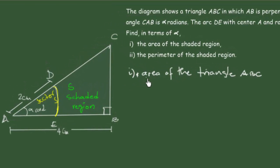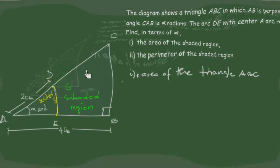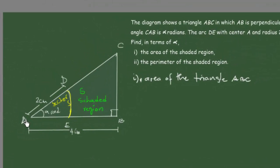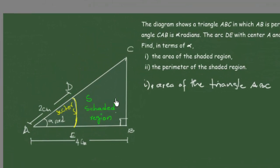To solve this problem, we will first find the area of the whole triangle ABC, then find the area of the sector, and subtract the sector area from the triangle area to get the area of the shaded region.